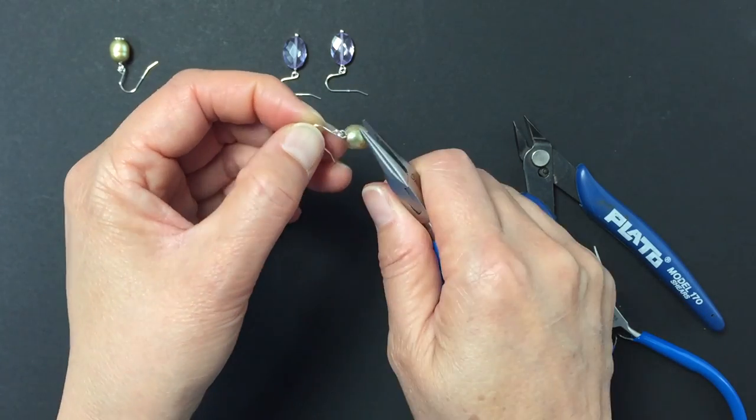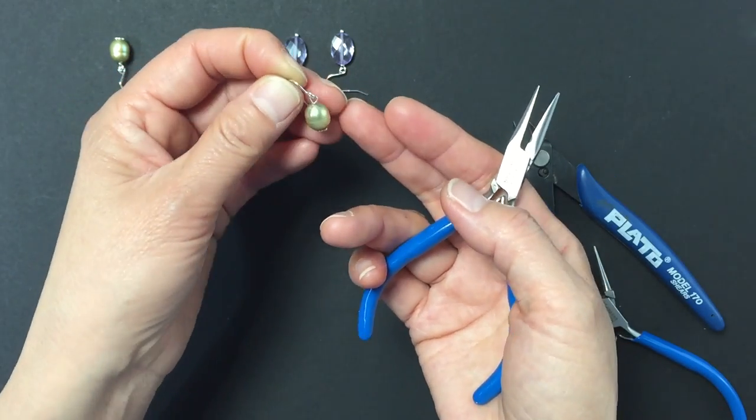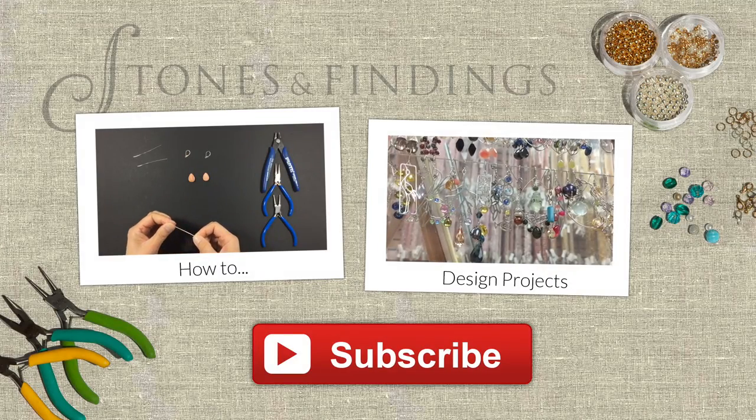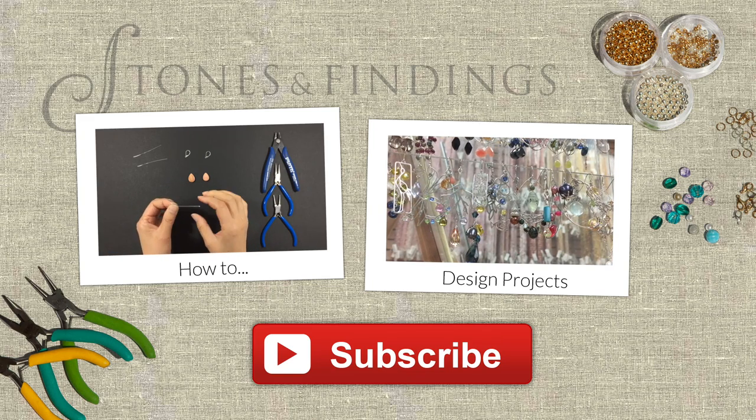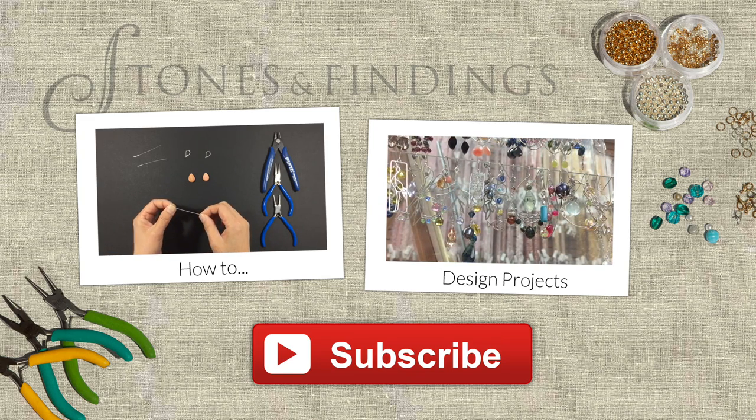And there you have it, an earring with a basic loop on an umbrella pin. Thanks for watching, we hope you enjoyed this video. Remember to subscribe to our channel because we've got more how-to's and design projects coming up.